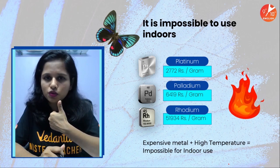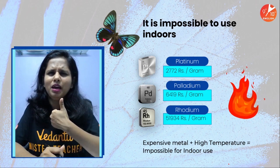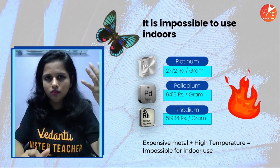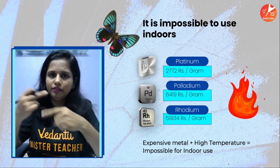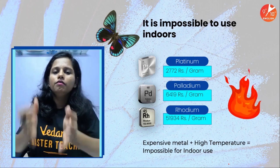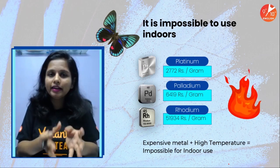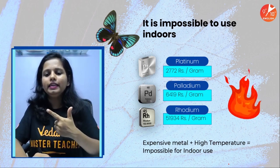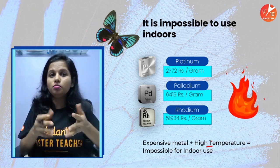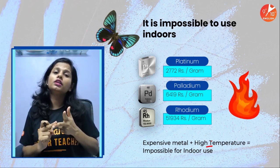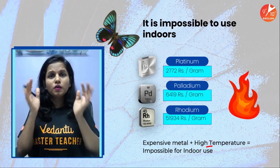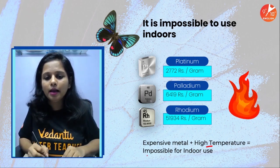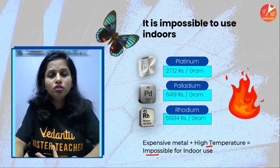Why is it impossible for home air purifiers? Point one: these metals are very, very expensive. And unlike a one-time investment, just as we change the candle in our home water filters like Aquaguard every two to three months, we have to change the air purifier's filter regularly — so it is not cost-efficient. Secondly, creating a high temperature within our homes and maintaining a controlled environment is a difficult task. All these factors make the use of catalytic converters in home air purifiers absolutely impossible.